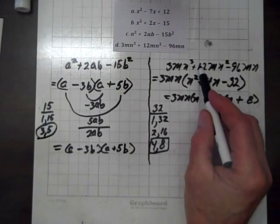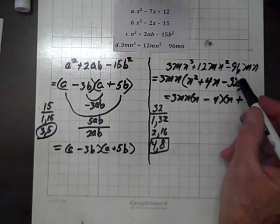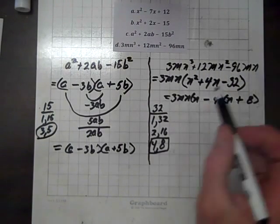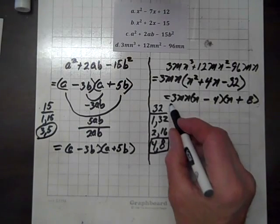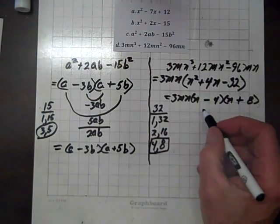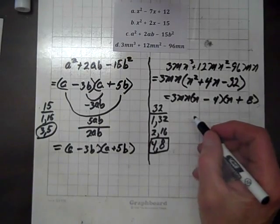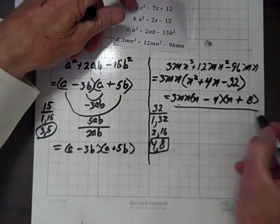3mn³ + 12mn² - 96mn factors into 3mn times (n - 4) times (n + 8).